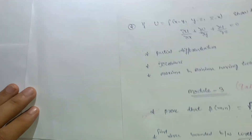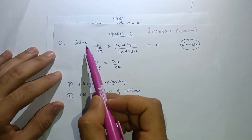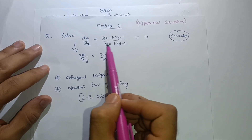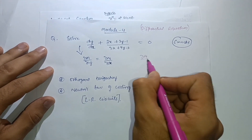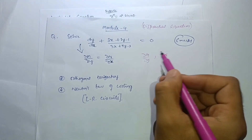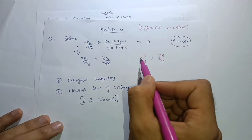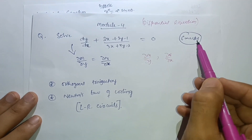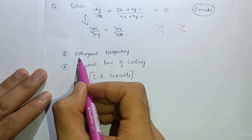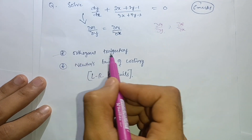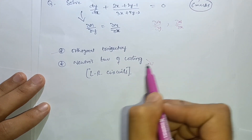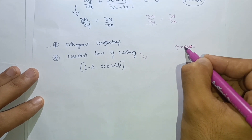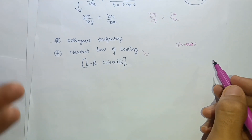In Module 4, questions involve solving differential equations such as dy/dx + (2x + 2y − 1) / (3x + 4y − 2) = 0. You need to check if it is exact by computing ∂M/∂y and ∂N/∂x; if they are equal, apply partial differentiation to get the solution — this gives you six marks. Also cover orthogonal trajectories and Newton's law of cooling, including LR circuits and temperature-based questions, for another seven marks.